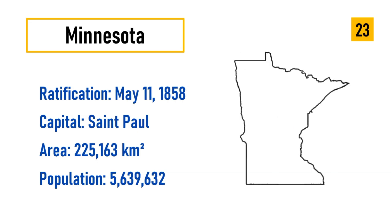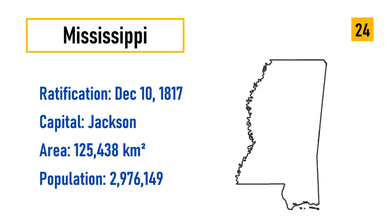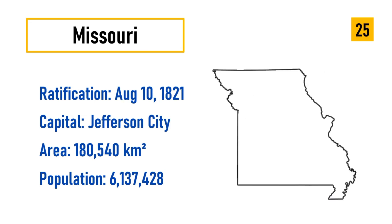Number 23: Minnesota, ratification May 11, 1858, capital St. Paul, area 225,163 square kilometers. Number 24: Mississippi, ratification December 10, 1817, capital Jackson, area 125,438 square kilometers, population 2,976,149.